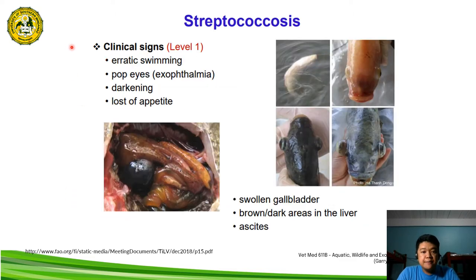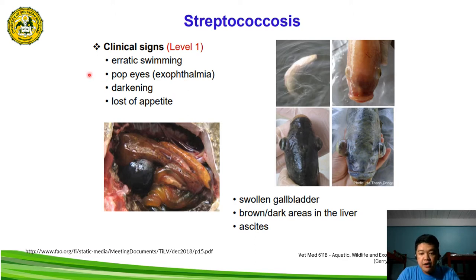For the clinical signs, tilapia affected with streptococcosis exhibit erratic swimming. There is also the popping of the eyes, known as exophthalmia or exophthalmos. There is also the darkening of the skin and loss of appetite. Internally, there is a swollen gallbladder, brown and dark areas in the liver, and ascites.